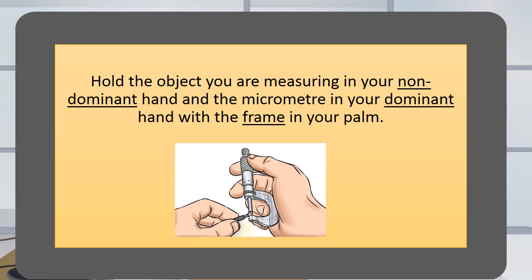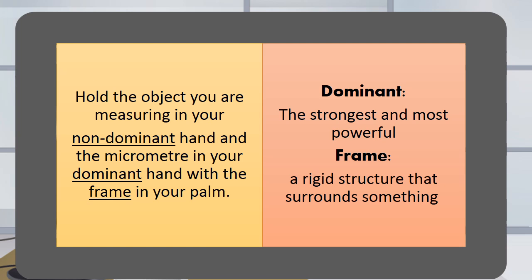Hold the object you are measuring in your non-dominant hand and the micrometer in your dominant hand with the frame in your palm. Dominant is the strongest and most powerful. Frame is a rigid structure that surrounds something.